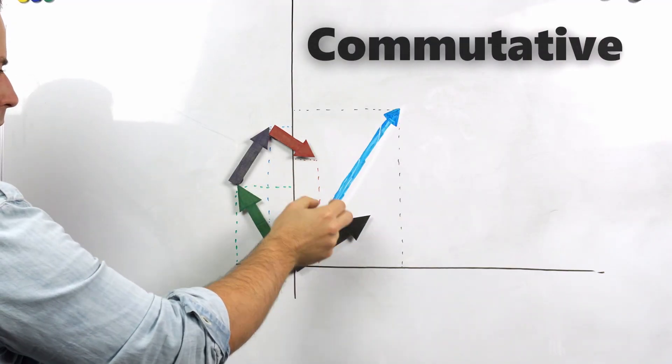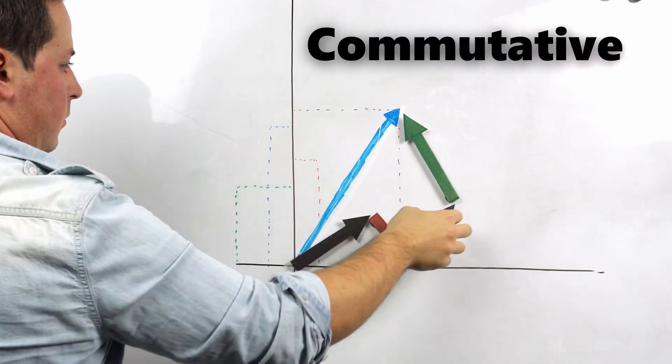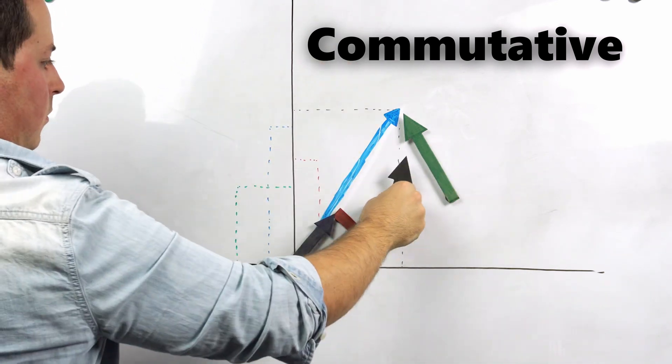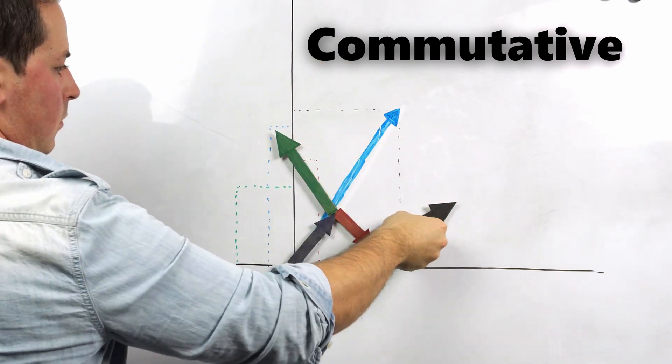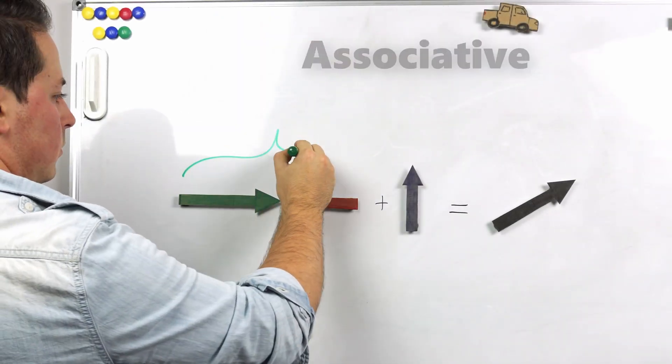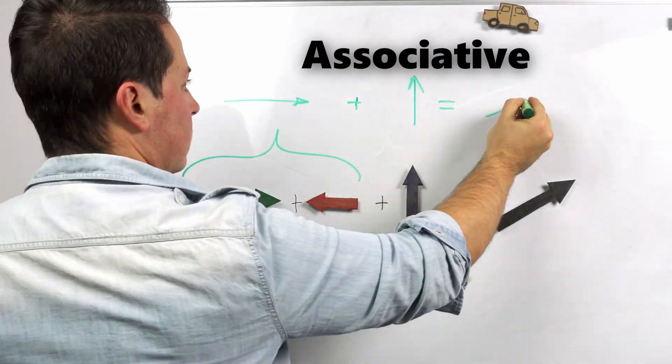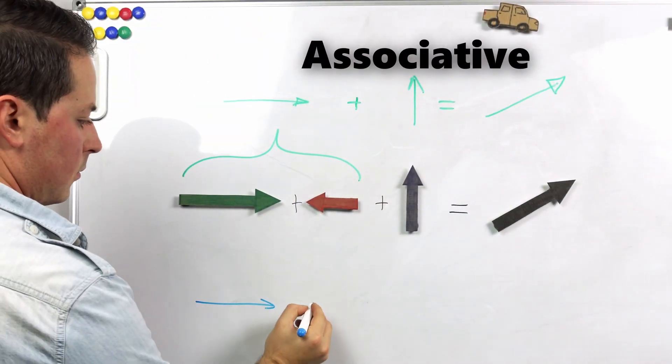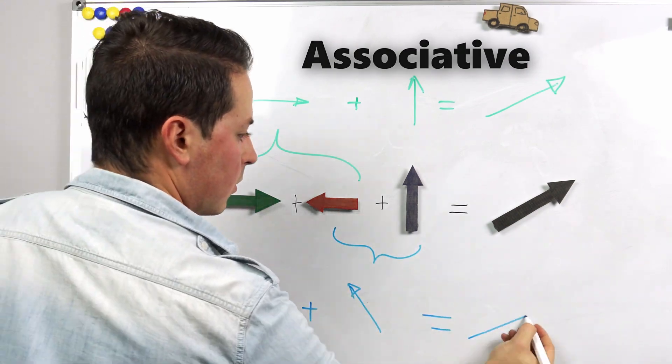This might sound like big words, but it's exactly the same that we do with numbers. Commutative means that we can reorder the vectors in the sum however we would like and we will end up with the same answer. And associative means that we can regroup the vectors and also get the same answer no matter what.